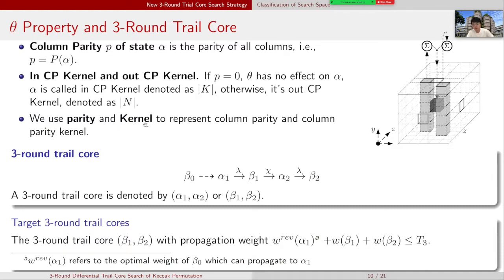With parity and kernel to represent column parity and column parity kernel, a three-round trail core is denoted by pair of α1 and α2, or pair of β1 and β2. The target three-round trail core means a three-round trail core β1 and β2 with propagation weight - the reverse weight of α1 plus the weight of β1 plus the weight of β2 below threshold. The reverse weight of β1 refers to the optimal weight of β0, which can propagate to α1.